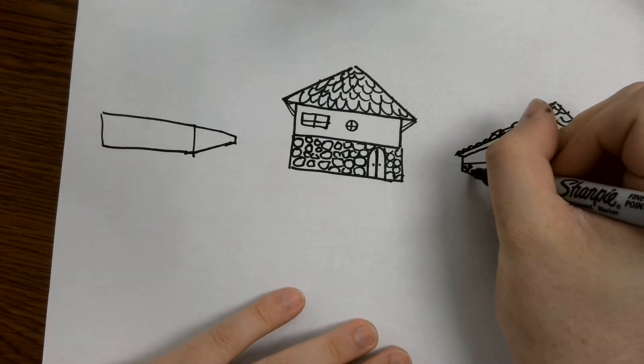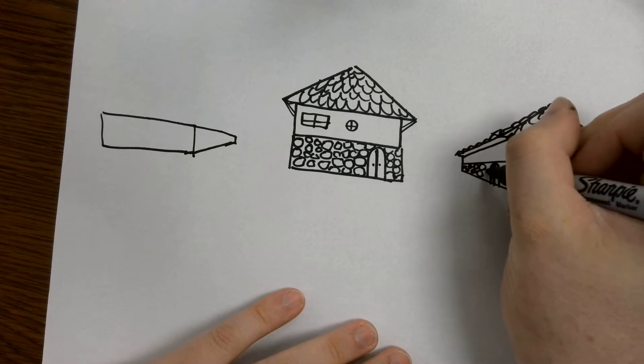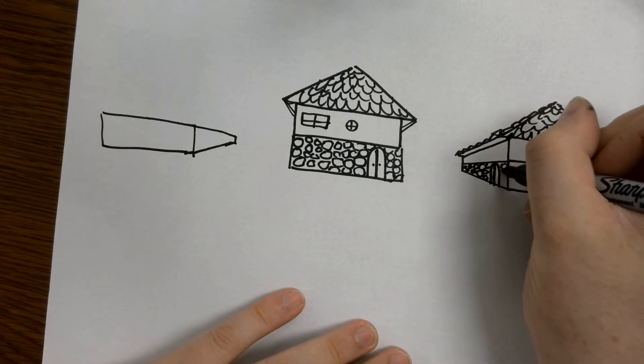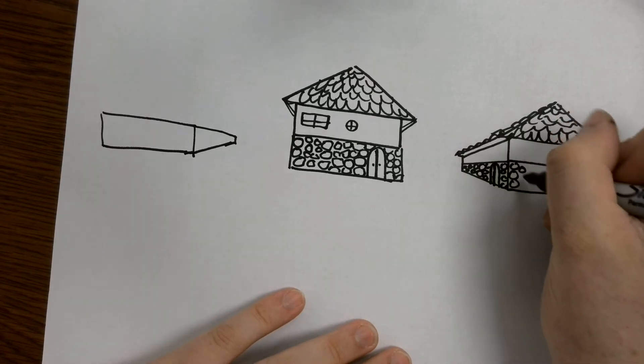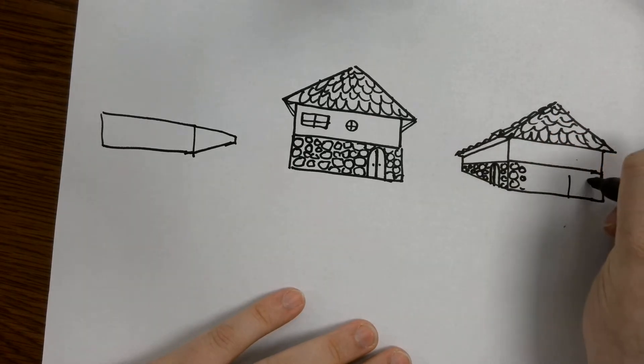We're going to add our rocks. Just going to make the rocks get bigger as they come closer to me. They're going to stay the same size over here. We're going to add a chicken coop if we wanted to. Here we go.